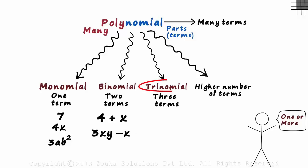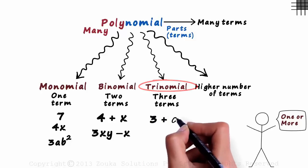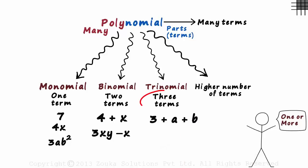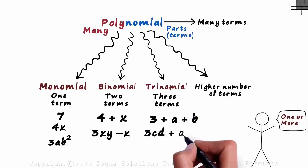An example of a trinomial would be 3 plus a plus b. It has three terms. One, two and three. Or maybe 3cd plus a plus eight.